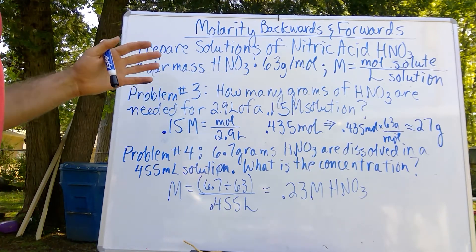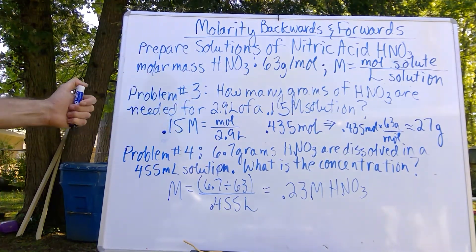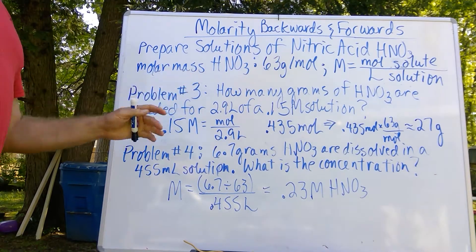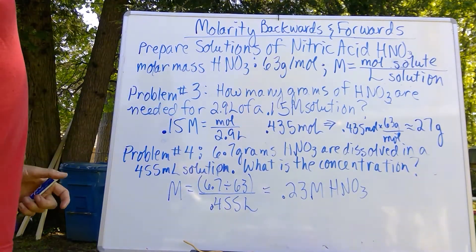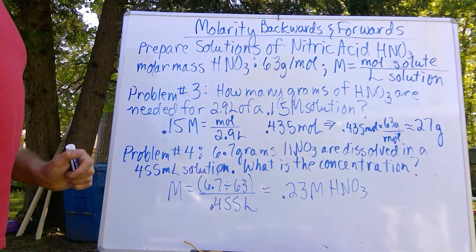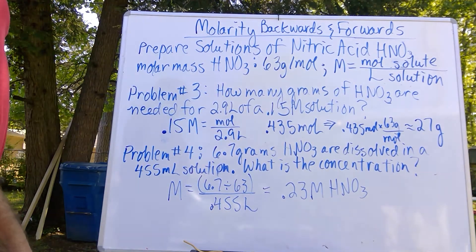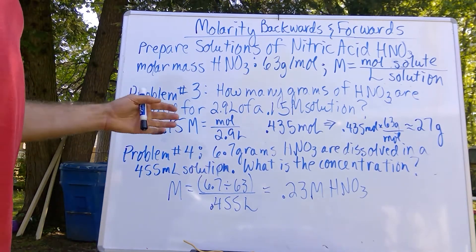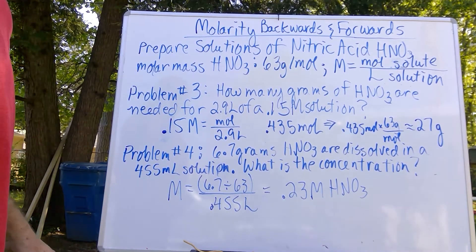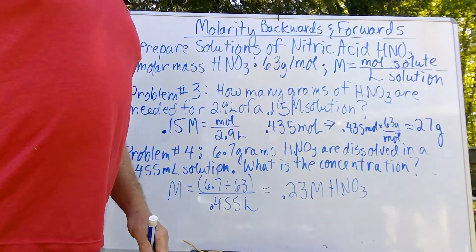Here we're going to do a couple of problems where mass is a factor in the solid. So problem 3 is how many grams of nitric acid are needed to make a 2.9 liter solution of a 0.15 molar concentration? In this case, we have to solve for moles first. We can't directly use molarity to find grams needed.